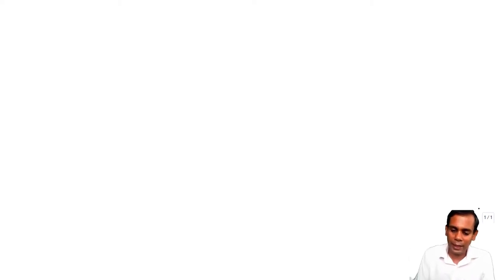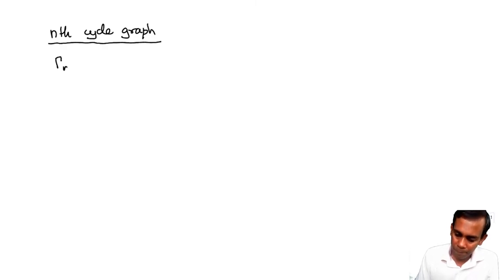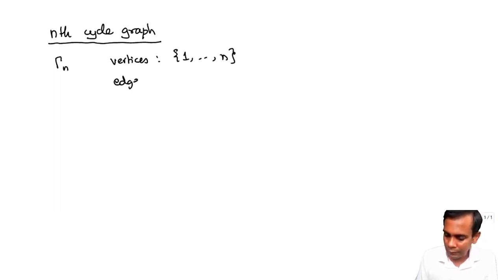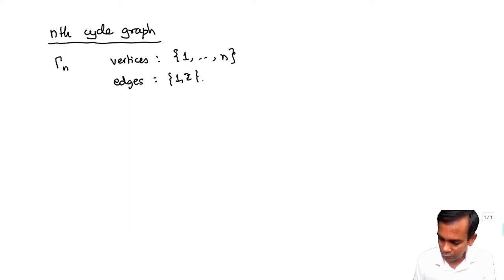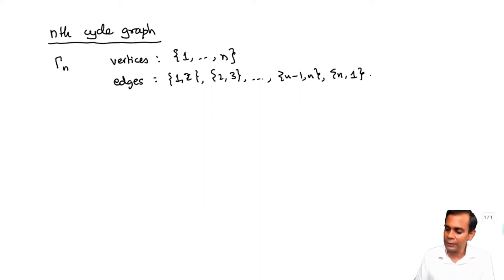Let me define the nth cycle graph. This is a graph Γn. The vertex set is just the set of integers from 1 to n. The edges are: 1,2 is an edge; 2,3 is an edge; and so on; n−1,n is an edge; and then n,1 is an edge. So it has n vertices and n edges.